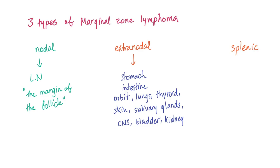There are three types of marginal zone lymphoma: nodal, extranodal, and splenic. Nodal affects the lymph nodes — specifically the margin of the follicle of the lymph node. Extranodal can affect the stomach, intestine, orbit, lungs, thyroid, skin, salivary glands, CNS, urinary bladder, or the kidney — a wide variety of organs. Splenic affects the spleen.